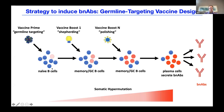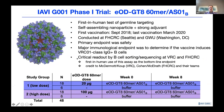I'll talk about four clinical trials we've just finished or are doing now to test this first priming step and one clinical trial testing a platform technology. IAVI G001 was a first-in-human test of germline targeting, using a self-assembling nanoparticle with a strong adjuvant. The trial ran from September 2018 to March 2020 at Fred Hutch and GWU. The primary endpoint was safety and tolerability, but the major immunological endpoint was to determine if the vaccine could induce VRC01-class IgG B cells.